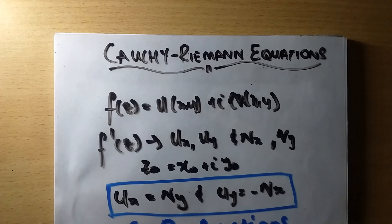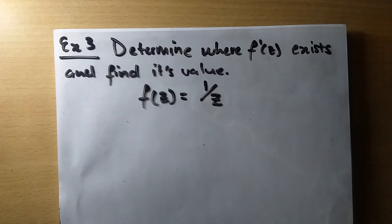Hi guys, welcome to another video, another session on the Cauchy-Riemann equations. Today we are doing another example for the sufficient conditions for differentiability. I don't think I need to explain the overview again, but I did explain it in the previous video — if you did not catch that one, please do watch the first part on sufficient conditions of differentiability.